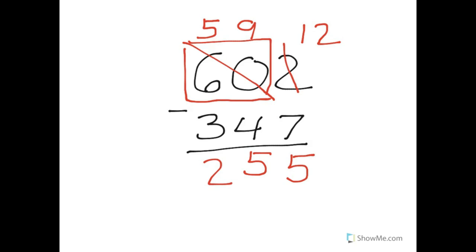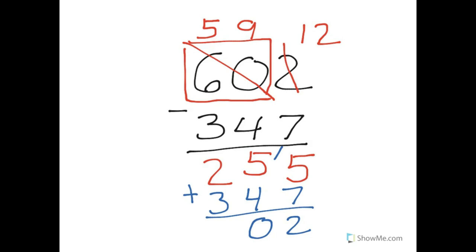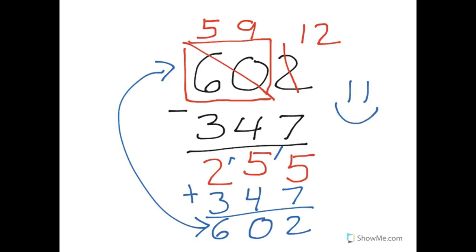Let's check our answer again real quick. We're going to add our 347 back into it. Five plus seven is 12, so I put down my two, I carry my one. One plus five is six, and six plus four is ten. Put down my zero, carry my one. One plus two is three, and three plus three is six. Are these numbers the same? Yes, they are. I'm going to give myself a smiley face.